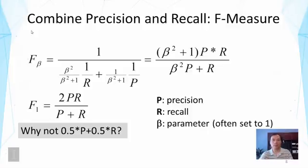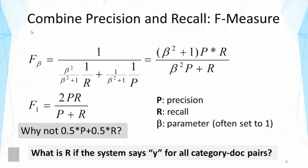There is a reason why the arithmetic mean is not used and why F1 is more popular. If you consider a case where the system says yes for all category-document pairs and compute precision and recall, the arithmetic mean is not as reasonable as F1. F1 tends to prefer a trade-off between precision and recall so that the two values are roughly equal. In an extreme case where one value is zero and the other is one, F1 will be low, but the arithmetic mean would still be reasonably high — which is undesirable.